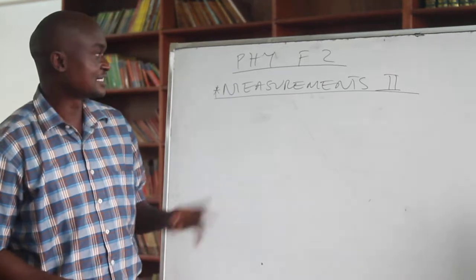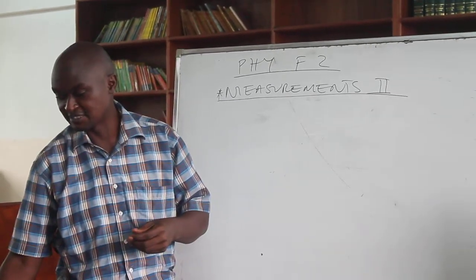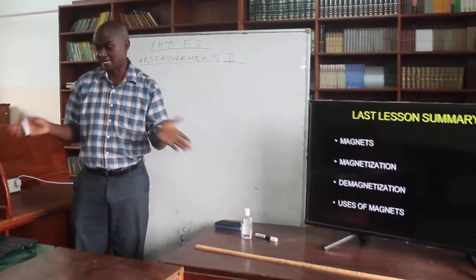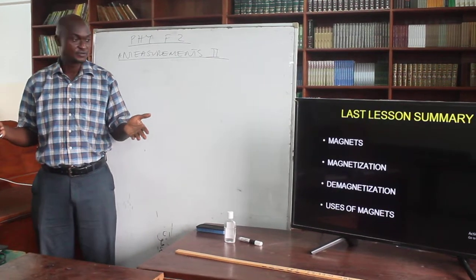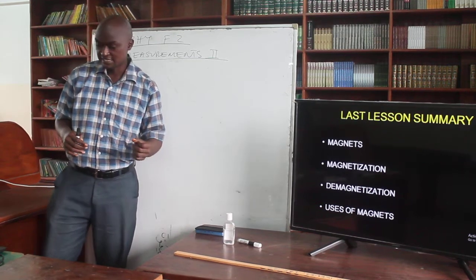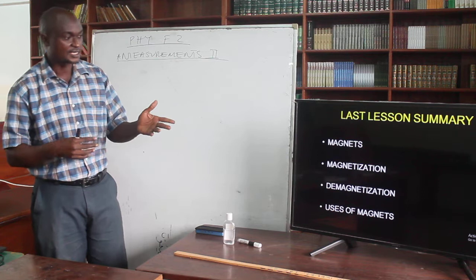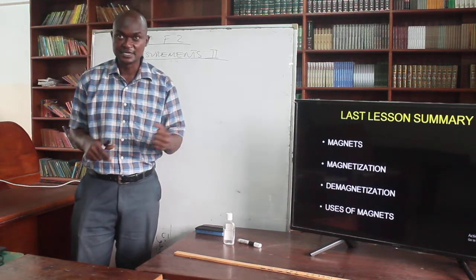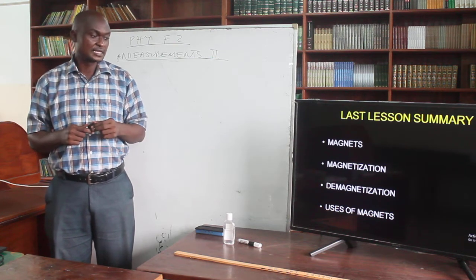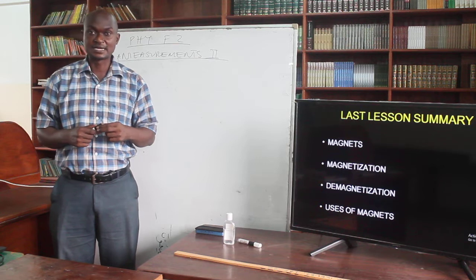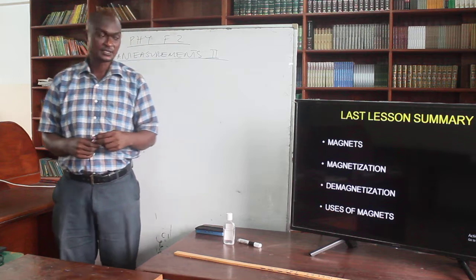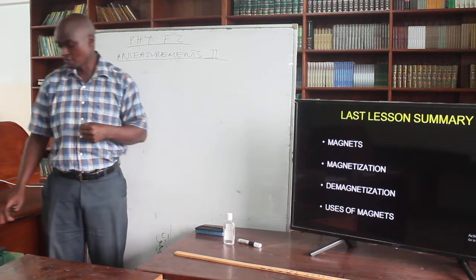For today, we are going to look at measurements 2, basically on numbers. In our last topic, we did talk about what magnets were, gave a history of magnets, talked about the process of magnetization, how we can magnetize by stroking, electrical methods and all that. We also talked about the uses of magnets. That was the last lesson on magnetization, and now we are going to the next topic of measurements.